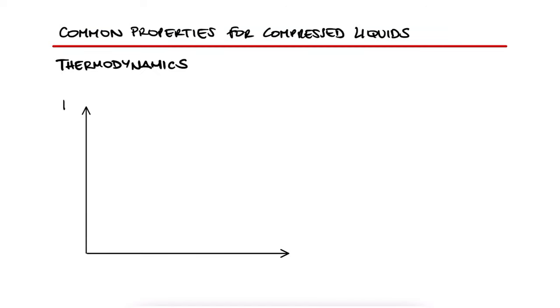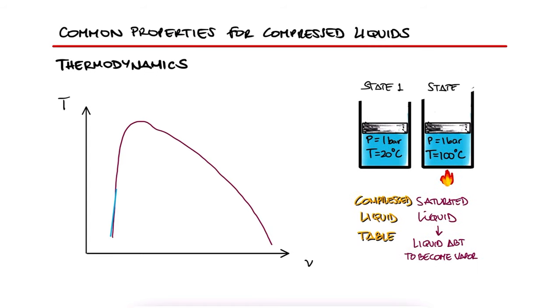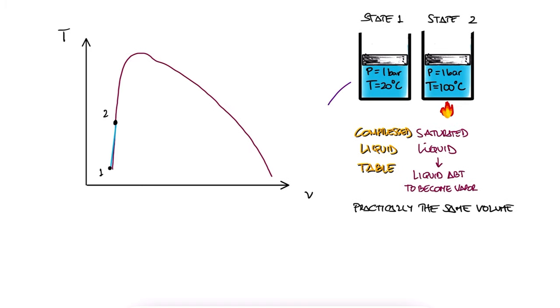Remember how we established that the change in volume for compressed water was barely noticeable when we first introduced T-V diagrams? Link to that lecture is below if you haven't watched it yet. Even though there is in fact a slight change in density, and therefore a change in specific volume when moving from one temperature to another, the change is even smaller when going from one pressure to another.